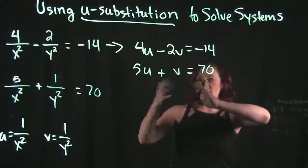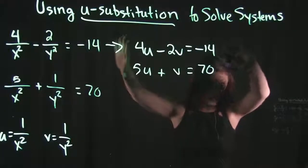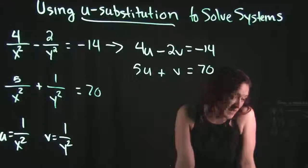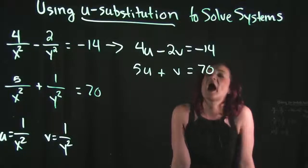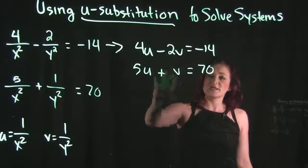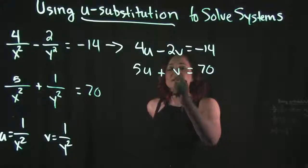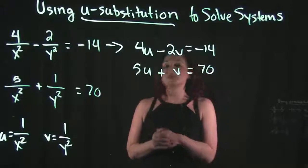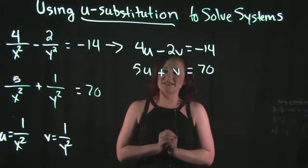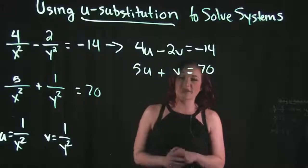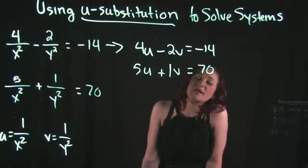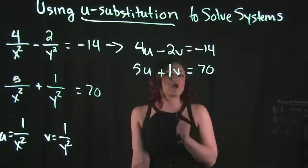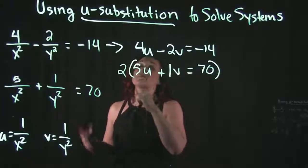We can solve systems by graphing, substitution, or elimination. I'm going to use the elimination method and choose to cancel out the v's. With elimination, we need the coefficients to be opposites — the same number but different signs. The top equation has negative 2 and the bottom has positive 1. The lowest common multiple of 2 and 1 is 2, and since the top equation already has a 2, I'll multiply the bottom equation by 2.